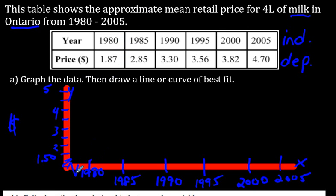Let's graph this data right now. In 1980, it was $1.87. So, I put it right there. It's less than $2. It doesn't have to be exact here. We're just going to get a general idea. In 1985, it was $2.85. In 1990, it was $3.30. In 1995, it was $3.56, not much more. In 2000, it was $3.82. And in 2005, it was $4.70. Whoa. It jumped up there a bit. Here is our plotted points.